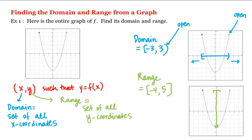Now some students think that we should not include 5 in our range because of this open circle over here. However, if you look over here, there is a point on the graph with the y-coordinate equal to 5, which is why we include 5. Therefore, these would be our answers.